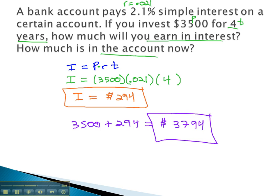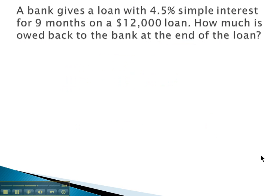Let's take a look at another example. In this example, a bank gives a loan with 4.5% simple interest for 9 months on a $12,000 loan. Interest is equal to principal times the rate times time. We want to calculate how much is owed back, so we need to know how much interest is earned on the account.